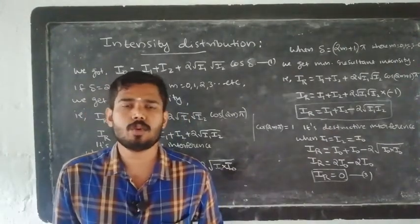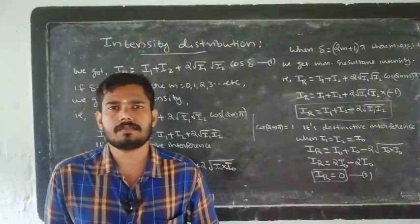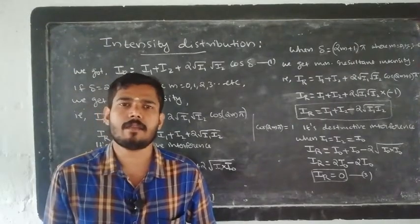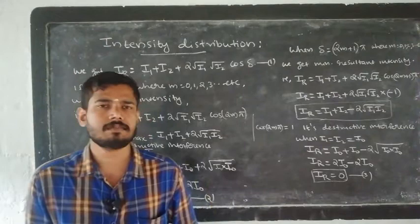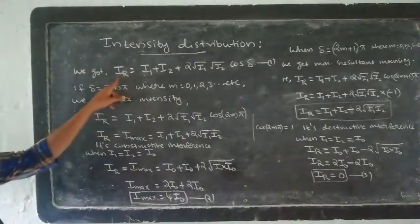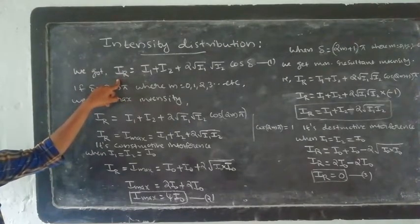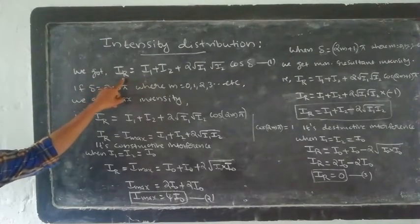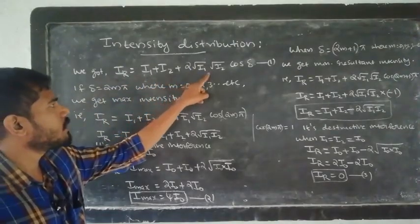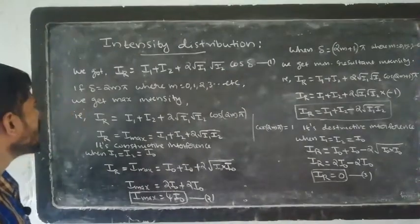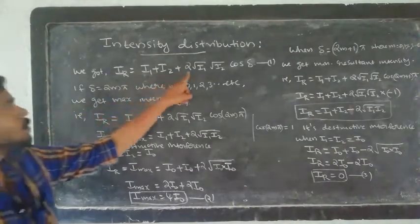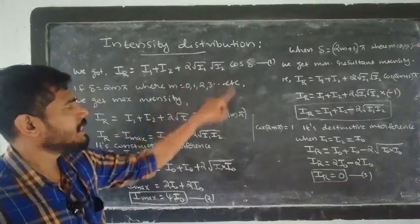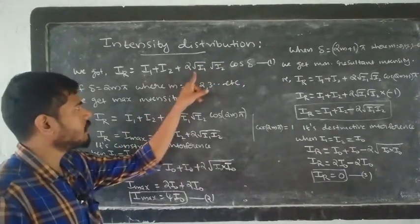Intensity Distribution Due to Interference. The intensity of the resultant light wave Ir is equal to i1 plus i2 plus 2√(i1)·√(i2)·cos(delta). The term 2√(i1)·√(i2)·cos(delta) is responsible for interference. This is what we call the interference term.